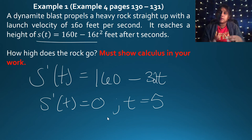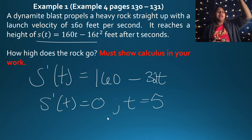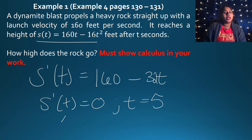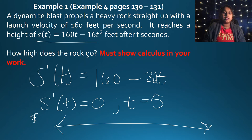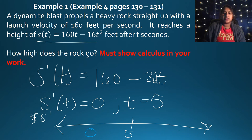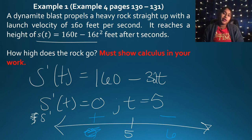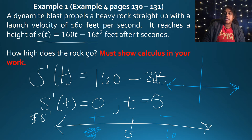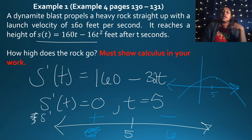As a good calculus student, we self-check with a sign chart for S prime. Testing values 0 and 6: plugging in 0 gives a positive value, and plugging in 6 gives a negative value since 32 times 6 is greater than 160. So from negative infinity to 5 the function is increasing, and from 5 to positive infinity it's decreasing. This confirms a maximum at T equals 5.